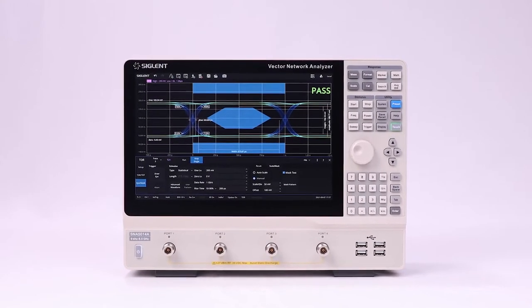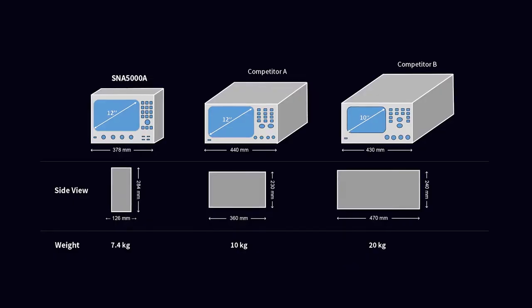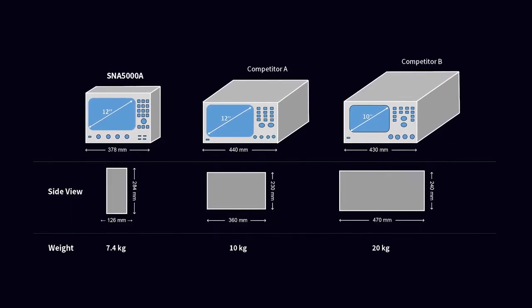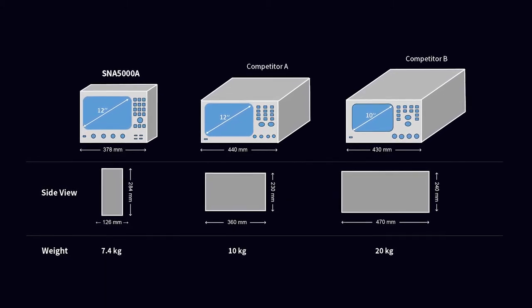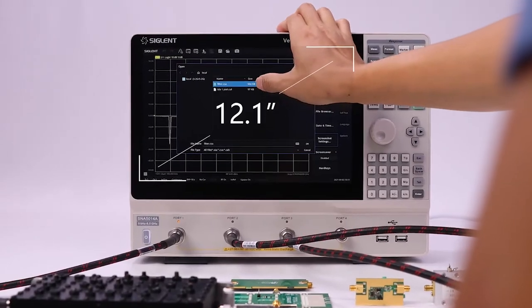Advance to the next level with the Siglent SNA 5000A vector network analyzer. It is smart on size and versatile on abilities. It's half the size of contemporary VNA designs but has one of the largest touch screens for ease of use.